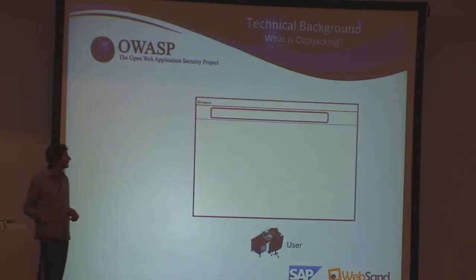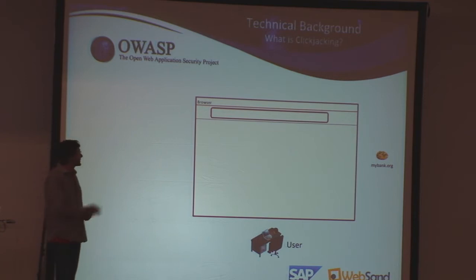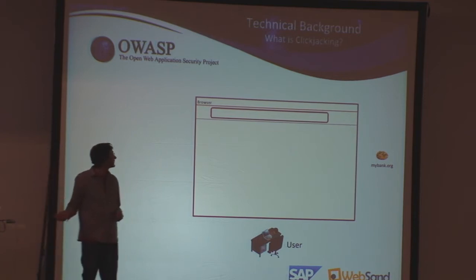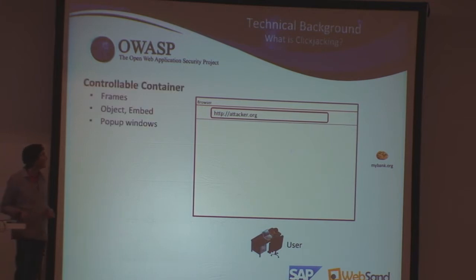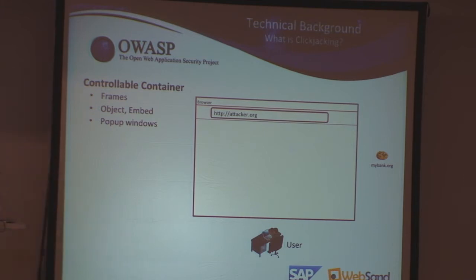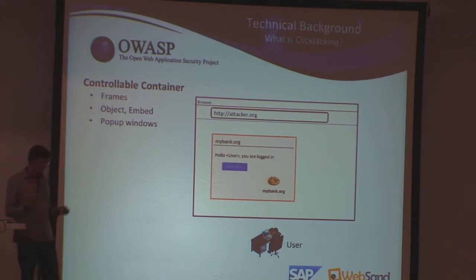How does this work? We have a browser that keeps state using cookies. For example, this browser has a session or authentication cookie from mybank.org, but the user is visiting attacker.org, which is showing some funny video or cat pictures. What the user doesn't know is that attacker.org is able to instantiate what we call controllable containers — mostly iframes, but also pop-up windows. This iframe is instantiated in the context of attacker.org, but as it runs in the user's browser, it gets the authenticated state of the user.